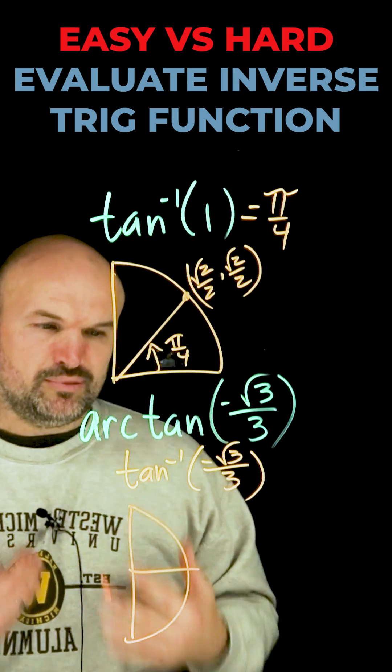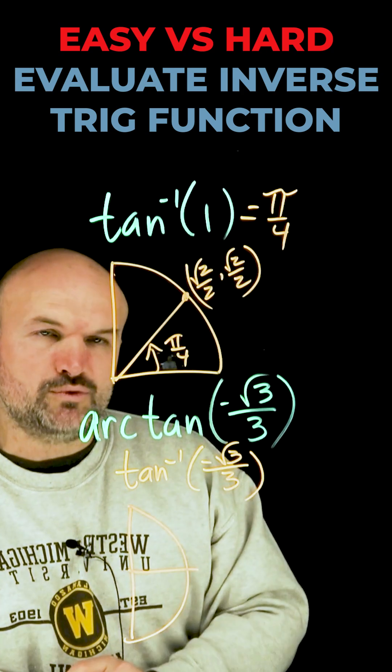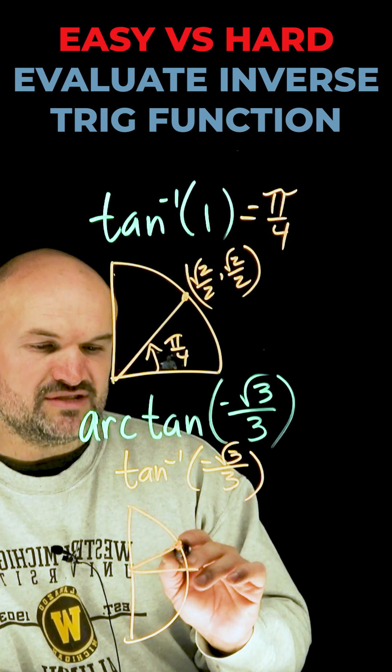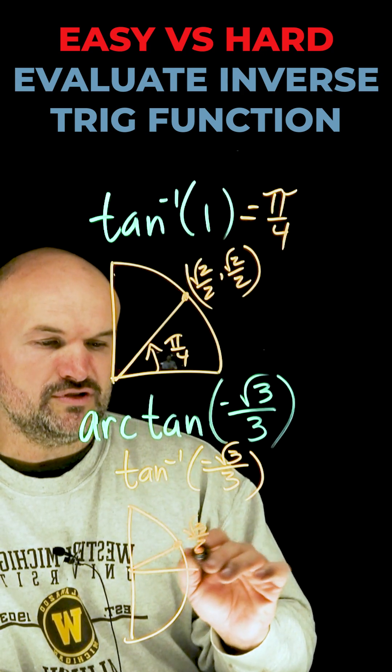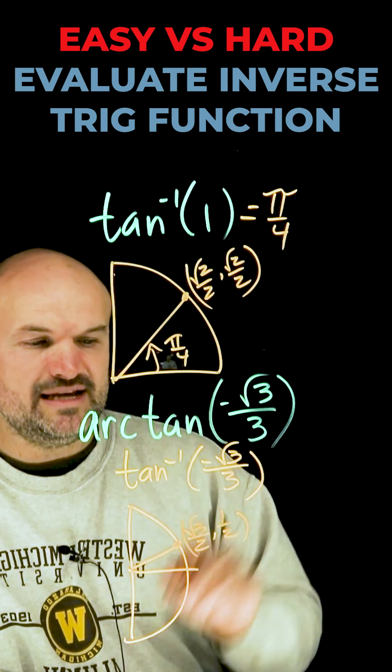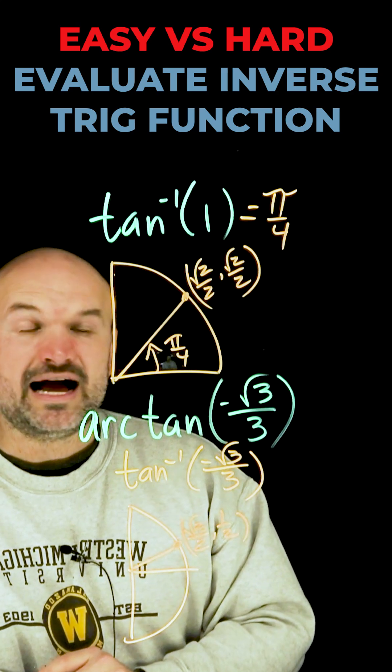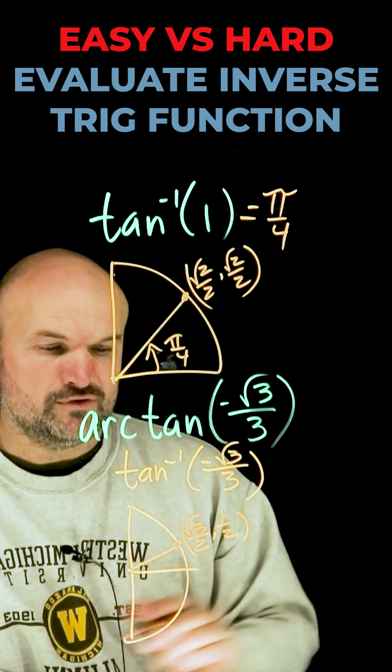So now we need to think about what coordinate points are even going to produce the square root of 3 over 3. Well, if we start with this first point, which is square root of 3 over 2 comma 1 half, we can see when I take the y coordinate over the x coordinate, I'm actually going to produce square root of 3 over 3.